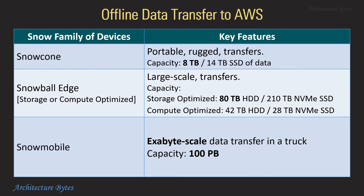The Snow family of devices supports offline transfer of data to AWS. Snow Cone has a capacity of about 8 terabytes. Snow Ball Edge comes in multiple flavors — storage optimized and compute optimized; the storage optimized version provides about 80 terabytes of HDD space. Snow Mobile supports exabyte-scale data transfer in a truck and has a capacity of 100 petabytes.